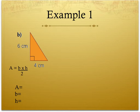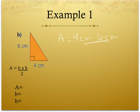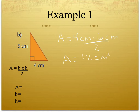Now that you've had some time to work through this example, we're going to solve it together. So area is equal to base, or 4 cm, times by our height of 6 cm, divided by 2. So our area is equal to 12 cm squared. We have not included decimal places because our base and our height do not have decimal places, but we do include cm squared.